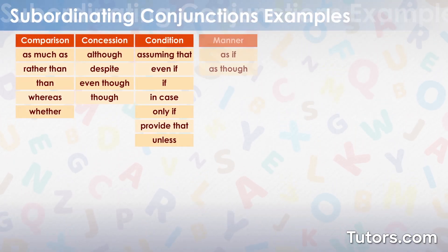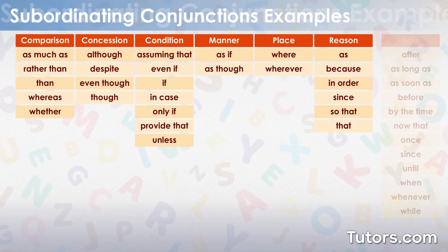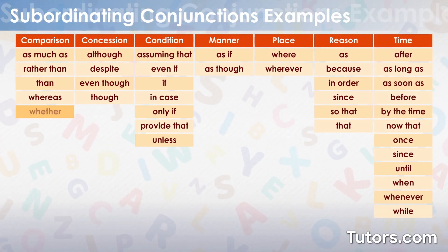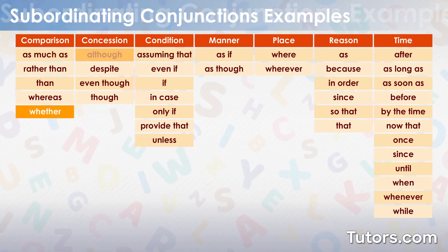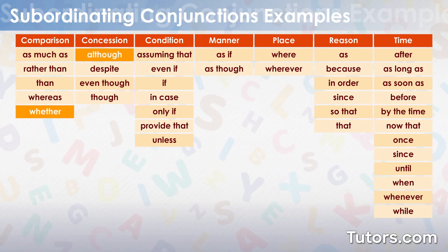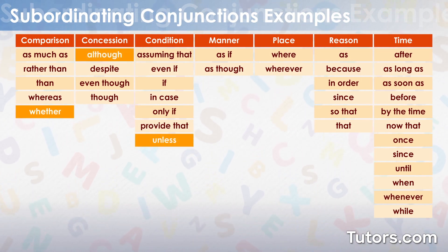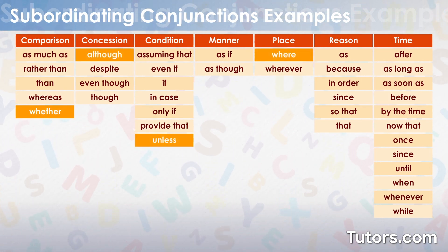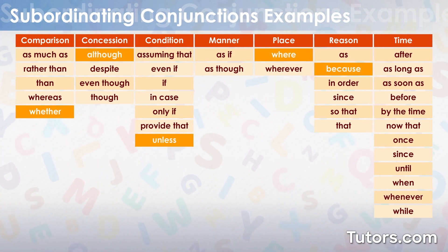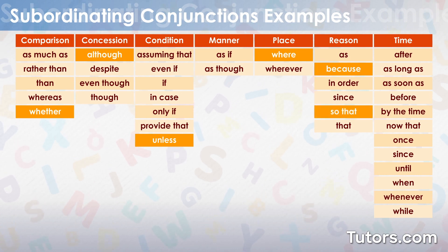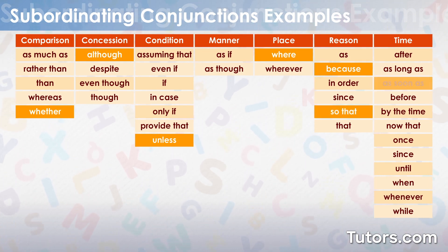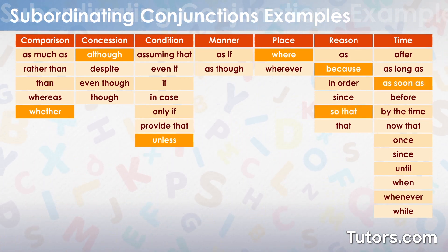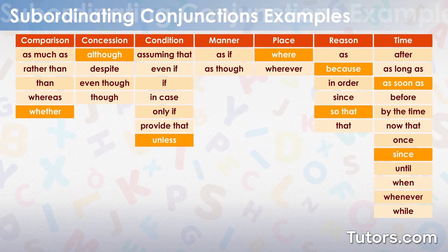The most common subordinating conjunctions include: whether, although, unless, where, because, so that, as soon as, and since.